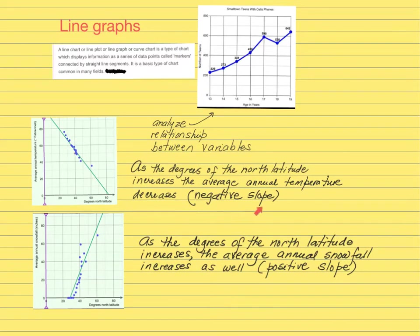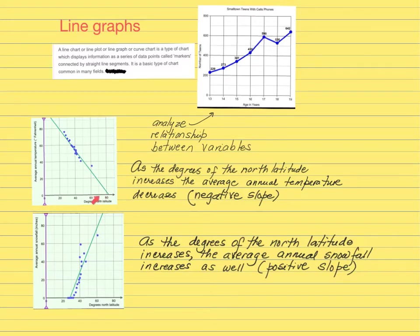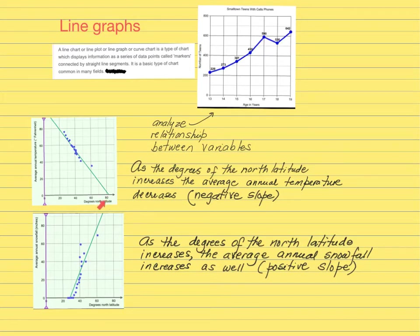In this case, the line of best fit is going to have a negative slope, meaning that if you want to analyze how degrees are affecting the annual temperature, you can say that as the degrees are increasing, the average annual temperature is going to decrease. Over here you have that in Fahrenheit. Let's say you want to increase the degrees in north latitude — once you go over 80 degrees, the temperature is going to fall below the origin of the coordinate system.